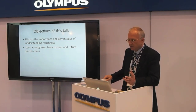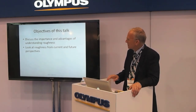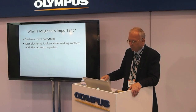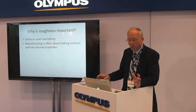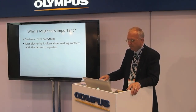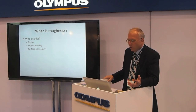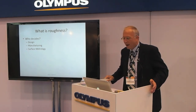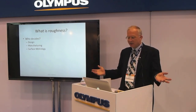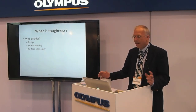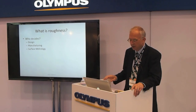In this talk, I want to discuss the advantages and importance of understanding roughness and have a look at current and future perspectives. Surfaces cover everything. Roughness is important, and manufacturing is often about getting the surface you want with the properties you want — roughness being one of those important properties. One of the questions worth looking at is: what is roughness and who decides? When a product is designed, the designer can specify the roughness of the part. Then it goes to manufacturing, and then quality assurance has to measure and verify it.